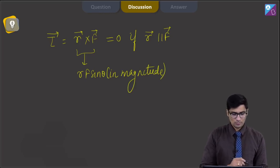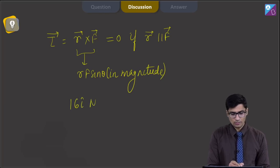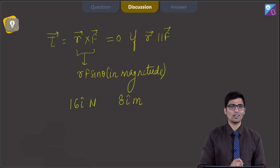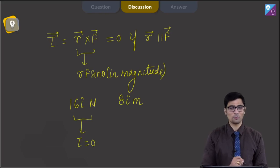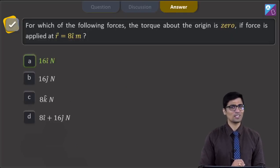Now, among the given options, the only option that is 16 i cap Newton is parallel to 8 i cap meter as both of them are along i cap direction. And hence, for this particular force, the torque will be equal to 0. The correct answer is option number 1.